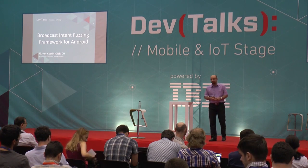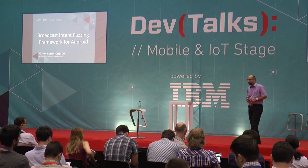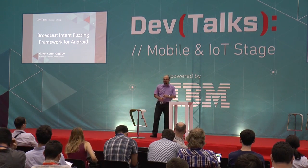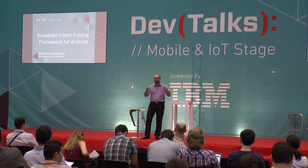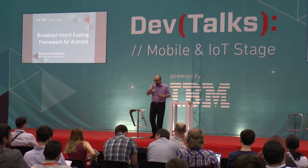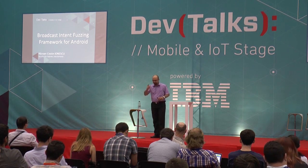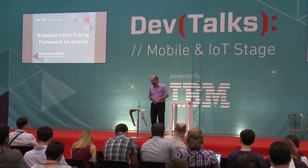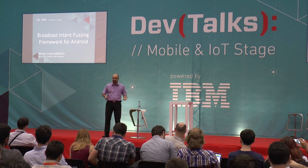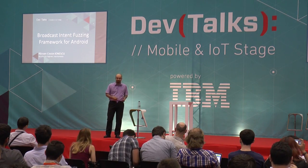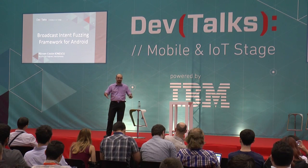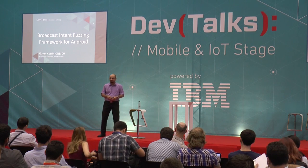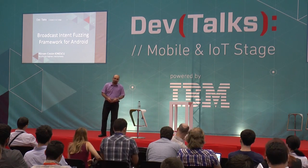Let's get back to business. I'm here today to present an open source project called the Broadcast Intent Fuzzing Framework for Android. I've also discovered how to enclose this project into a joke: a QA tester walks into a bar and asks for a beer, for zero beers, for minus one beer, for 99.99 beers — and the bartender says, have you thought that we may raise you an exception? That was my joke.